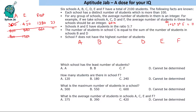So we confirm A = 300 and E = 420. The remaining four schools B, C, D, F must have values (in units of 60) summing to 23. The condition also states that the number of students in school C equals the sum of students in schools B and D.